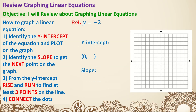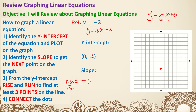Let's do another one. y equals negative 2. In slope-intercept form y equals mx plus b, there's no x part — so this is the same as y equals 0x minus 2. The y-intercept is at (0, negative 2). As for the slope, it's zero. Zero means the rise is zero, so you're not going up or down — it's a horizontal line. Since there's only one variable letter, this line crosses the y-axis and is horizontal, not crossing the x-axis. That's Example 3.